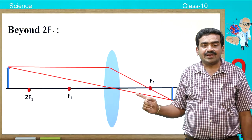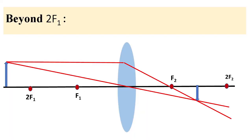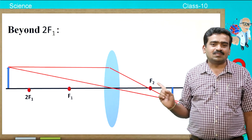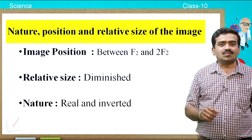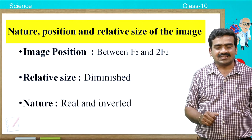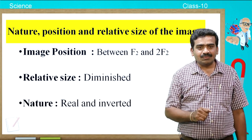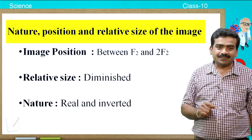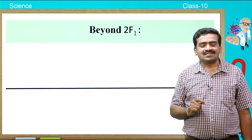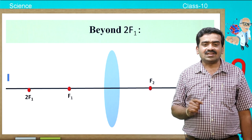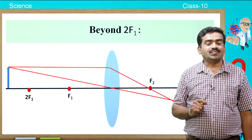Just compare the height of the object as well as the height of the image. The image nature is inverted and it is a little bit smaller in size — that is diminished — when compared to the height of the object. The image position is between F2 and 2F2, the relative size is diminished, and the nature of the image is real and inverted. See the animation and recall the nature of the image when the object is placed beyond 2F1.